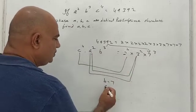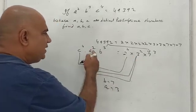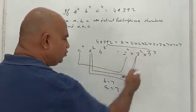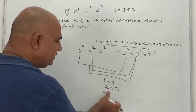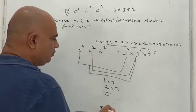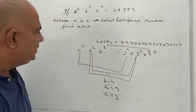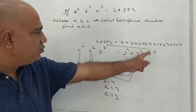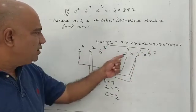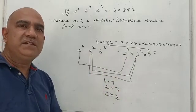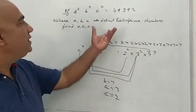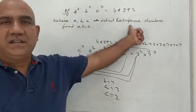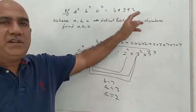By comparing the powers: we have a² and 3², so a = 3. We have b³ and 7³, so b = 7. And c⁴ matches 2⁴, so c = 2. This is a very simple question, but sometimes at the time of solving it doesn't immediately click as to how to go about it.